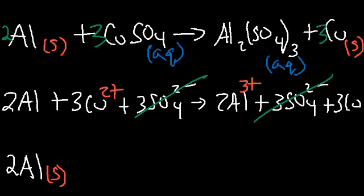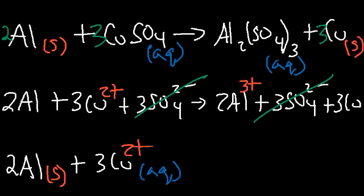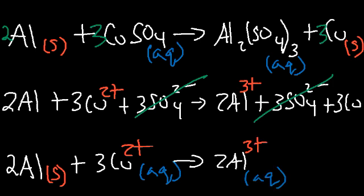The spectator ions are the three sulfate ions, which appear identically on both sides and are cancelled. What remains is the net ionic equation: 2Al(s) + 3Cu²⁺(aq) → 2Al³⁺(aq) + 3Cu(s). This is the balanced net ionic equation for this single replacement reaction.